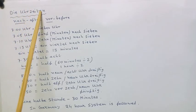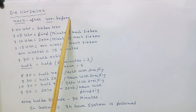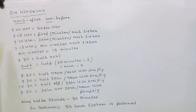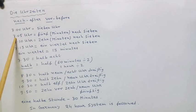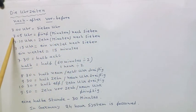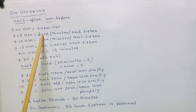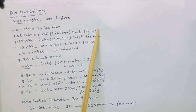Now, die Zeit — the time. Nach — after. Vor — before. Sieben — seven. Five minutes nach sieben — that is five past seven.